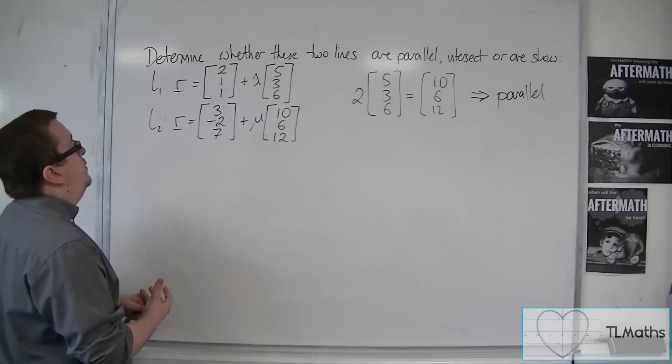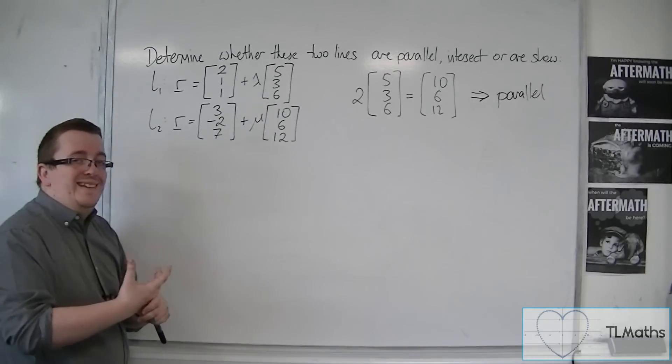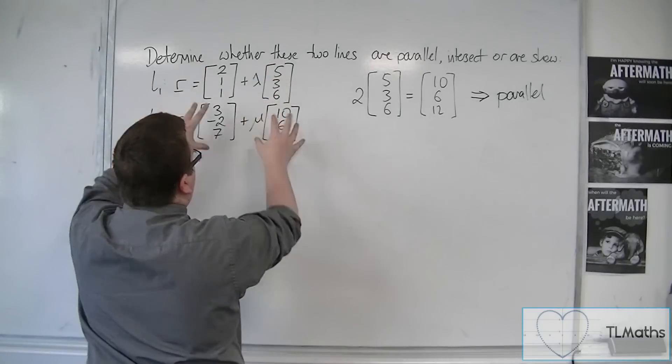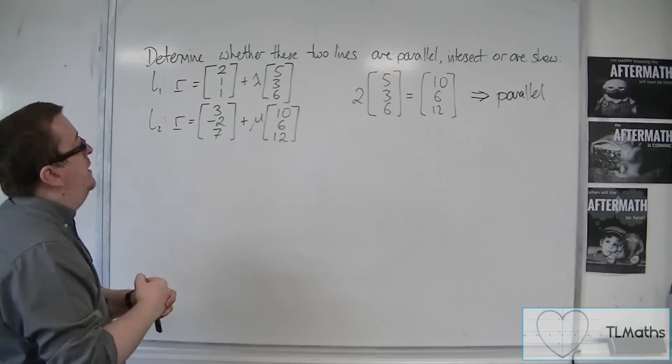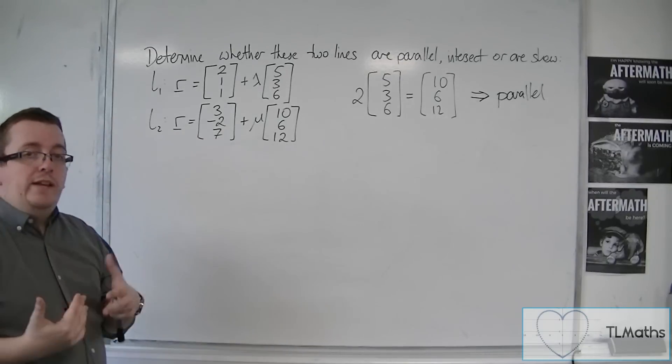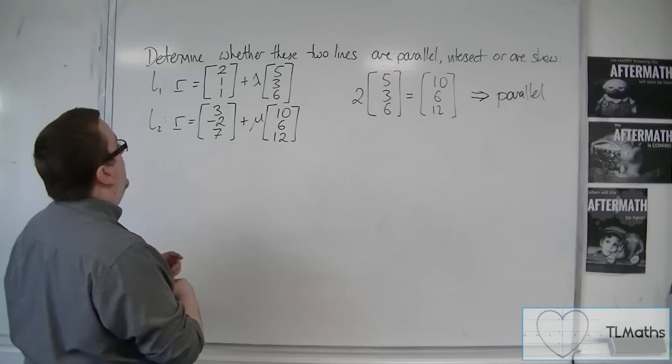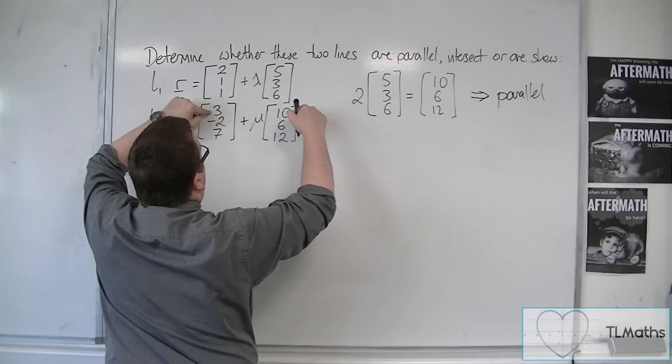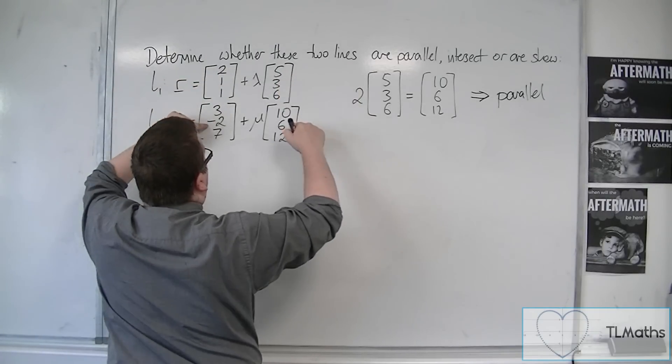what you can do is because you're trying to determine whether they intersect, you can put one equation equal to the other. So if you put one equal to the other, then that creates three simultaneous equations. Because we're going to have a top row equal to this top row, middle row equal to this middle, and bottom equal to that bottom.